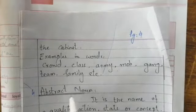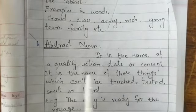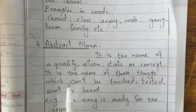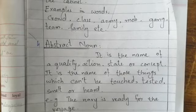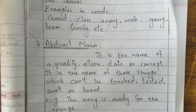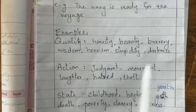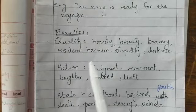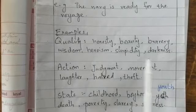The fourth kind is abstract noun. Abstract noun is the name of a quality, action, state, or concept. It is the name of those things which can't be touched, tasted, smelt, or heard. For example, 'The name is ready for voyage' — voyage means a sea journey, so it is an abstract noun. Abstract nouns that are names of qualities include: honesty, beauty, bravery, wisdom, heroism, stupidity.